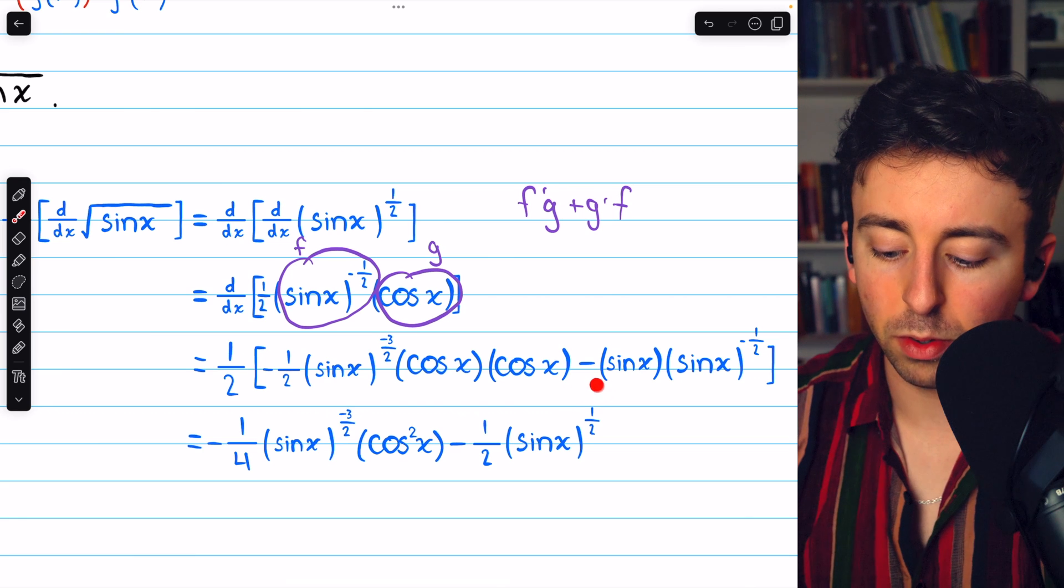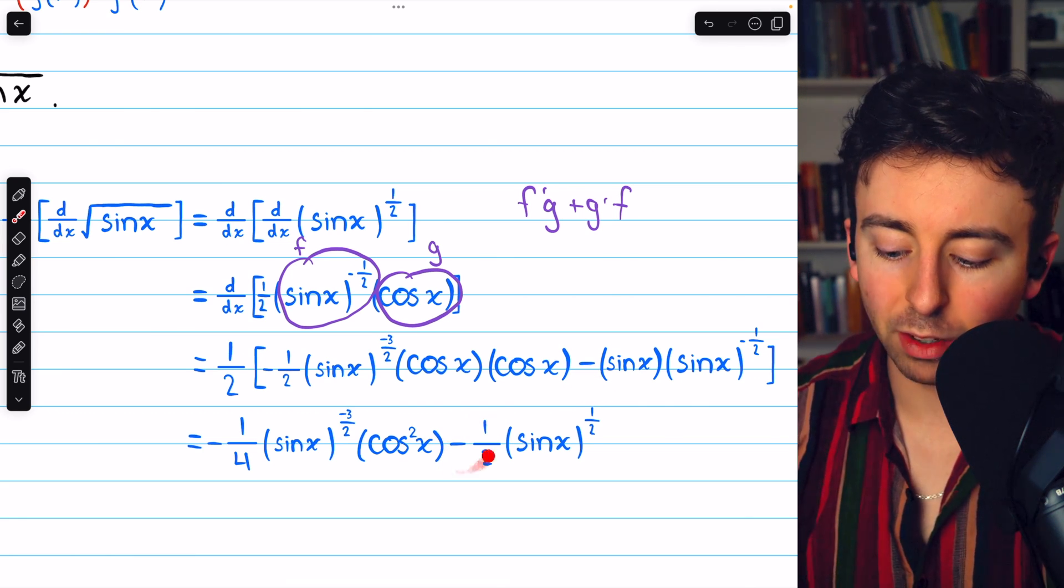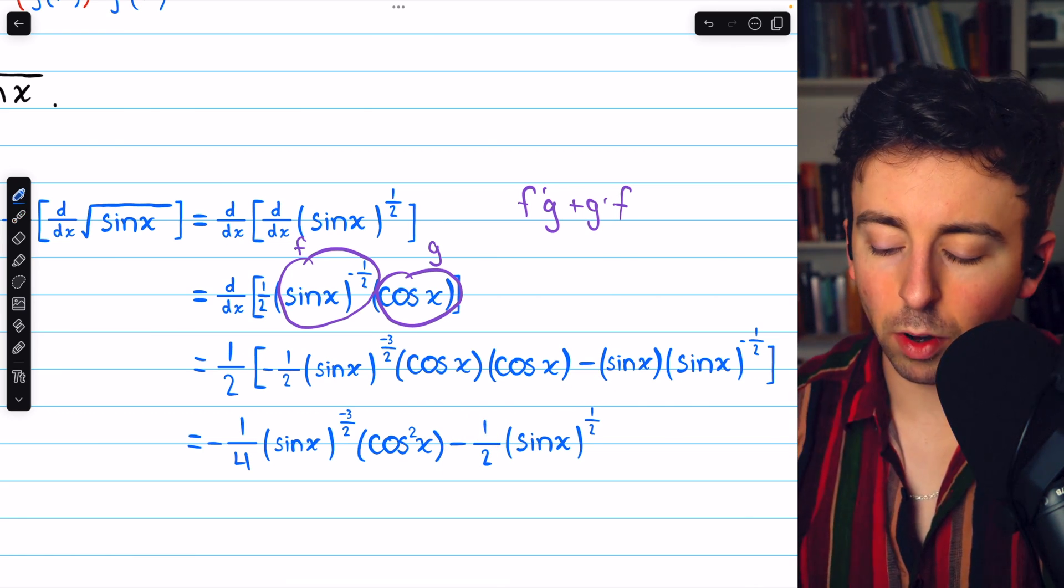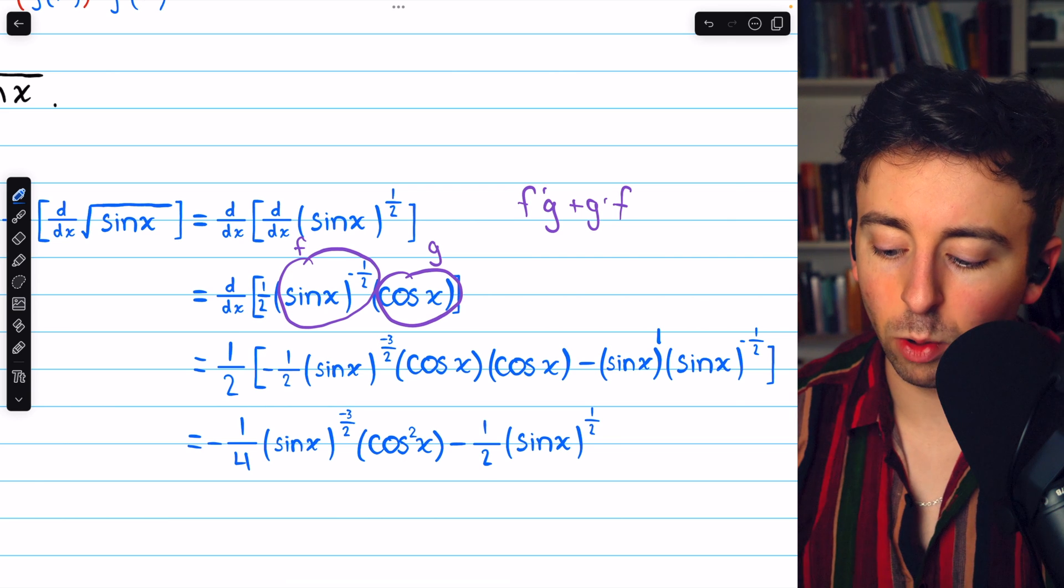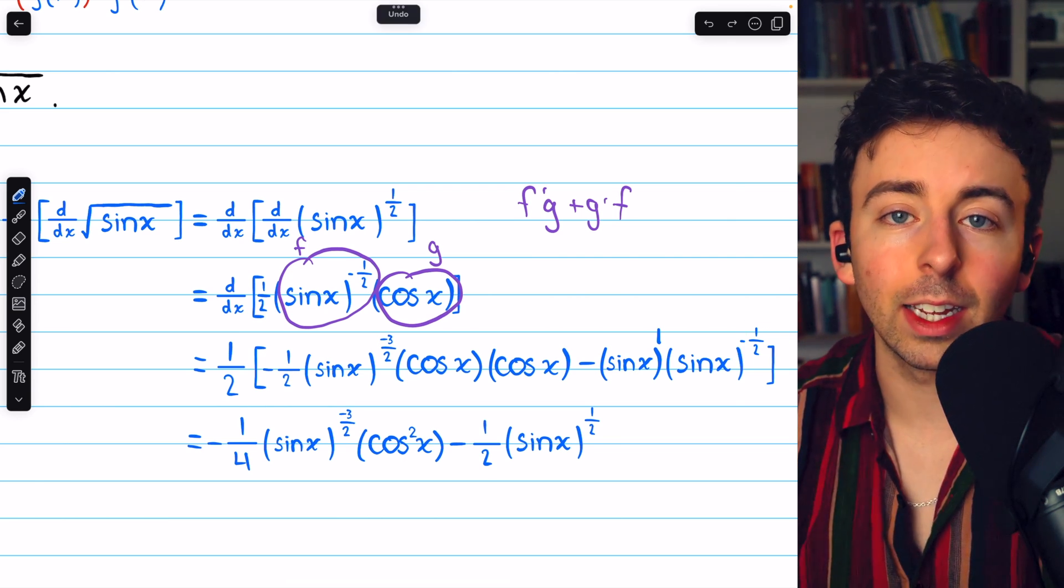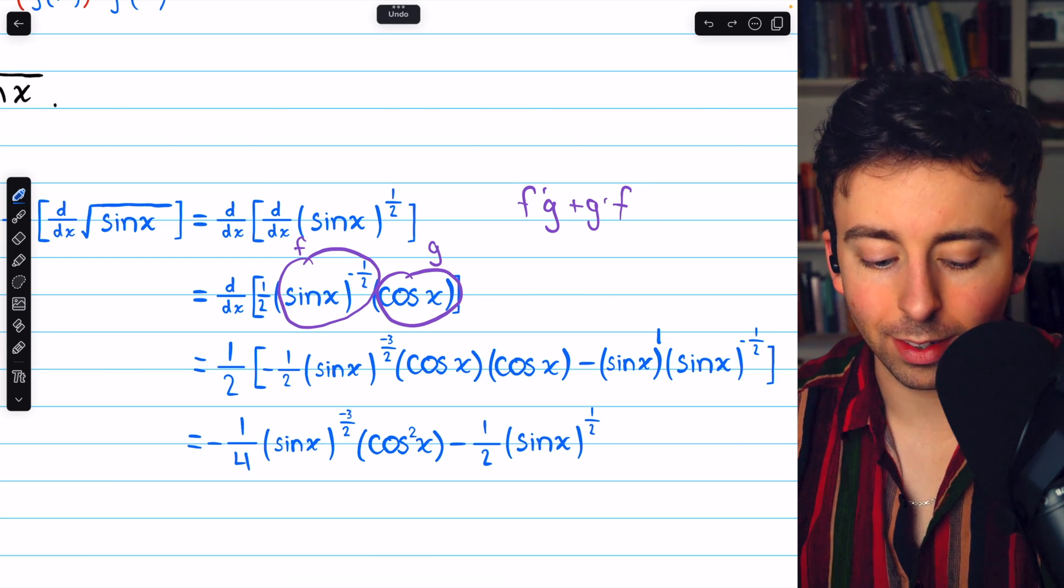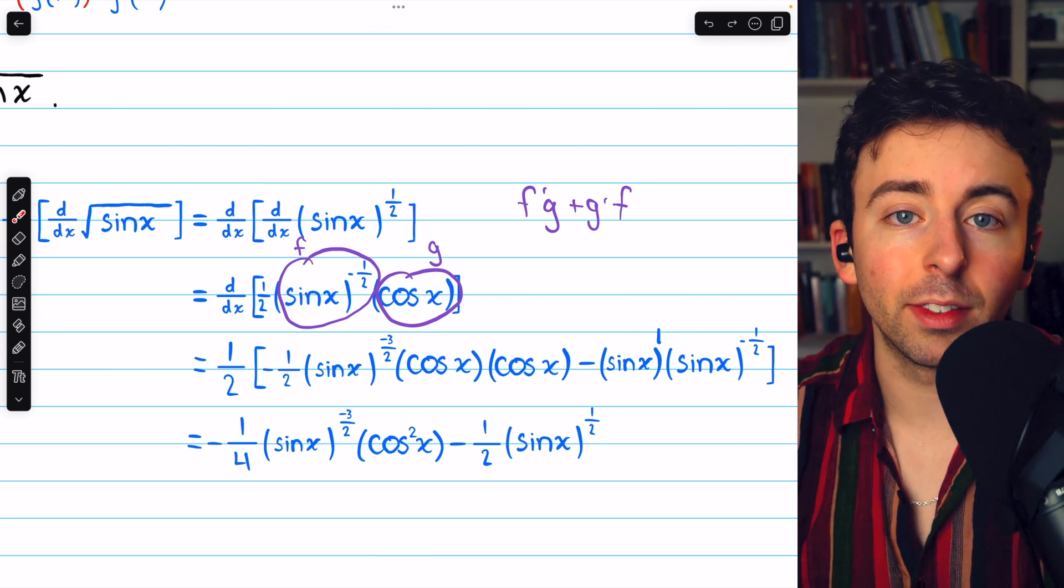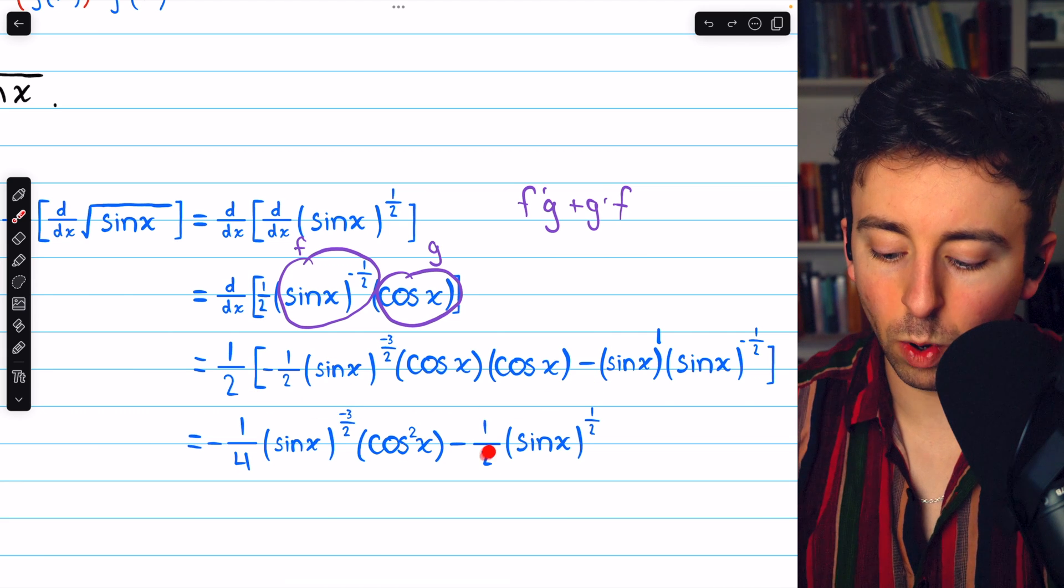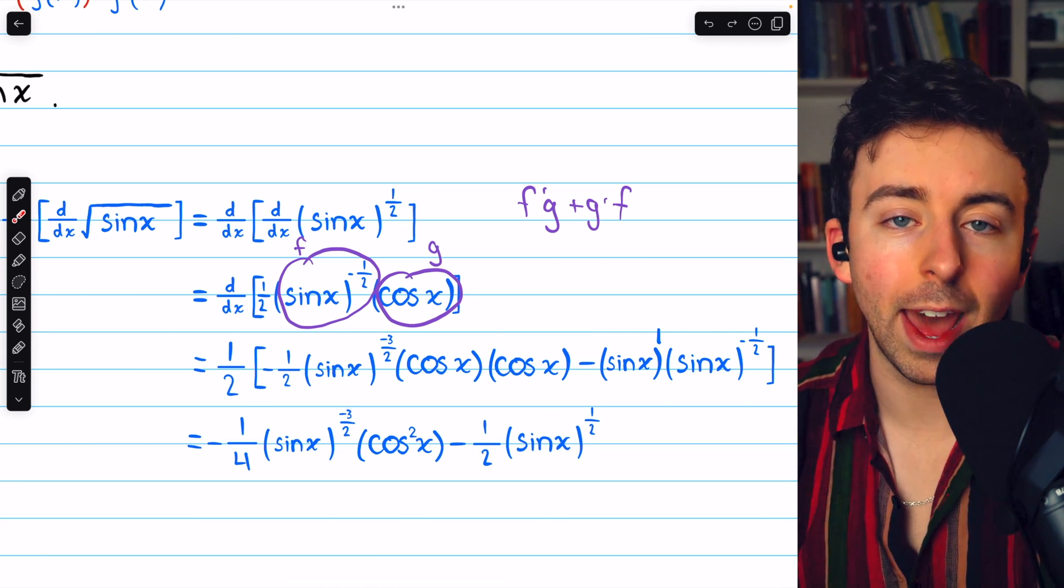Then the one-half distributes over here, so we have minus one-half. And then we have to use our exponent rules. Sine x to the one times sine x to the negative half. Well, for that we just add the exponents. One plus negative half gives us the exponent of positive half. So minus one-half sine x to the one-half.